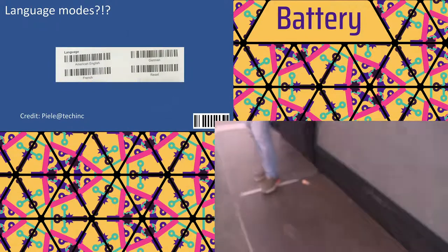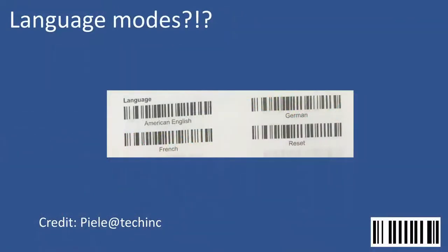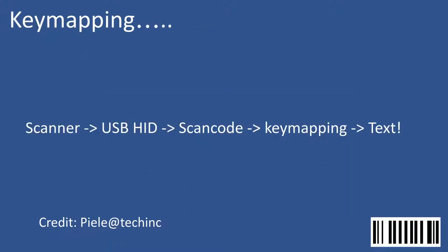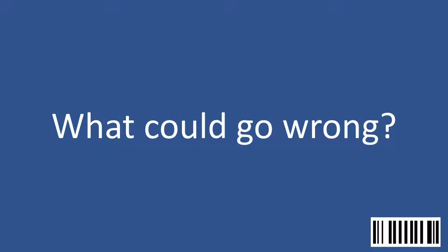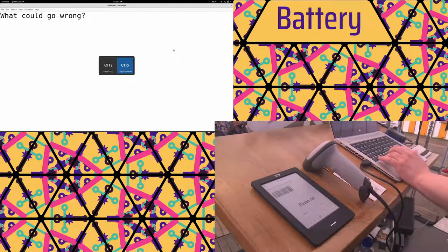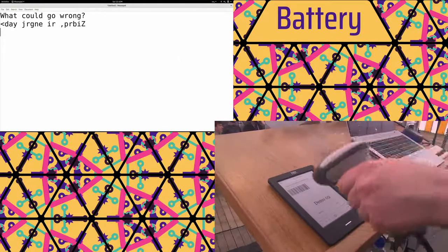The next demo — credit to Pila at Tech Inc. In the manuals we found language modes and wondered: why would a scanner need a language mode? Then we figured out: it's a USB HID device that communicates scan codes to the host system, which uses key mapping to produce text. That means the key mapping on your machine matters. What could go wrong? Let's change the key mapping to something a lot of hackers use — the Dvorak layout. Now we know what can go wrong.